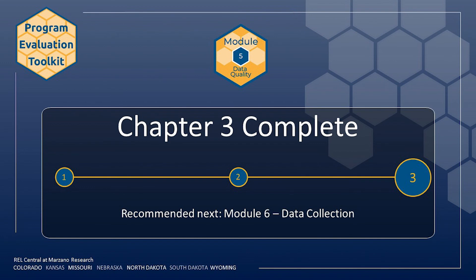This concludes Chapter 3 and Module 5. Try to complete the first five columns of the evaluation matrix before starting Module 6, so that you identify which data collection instruments you will need to complete your evaluation. If you find that you do not need to identify or develop an interview, focus group, or observation protocol or a survey, you can skip ahead to Module 7, which covers data preparation and analysis.